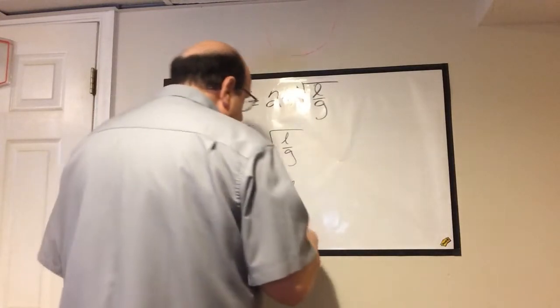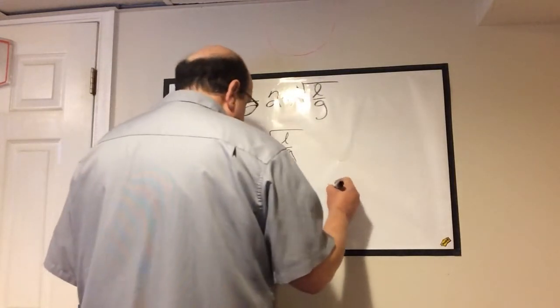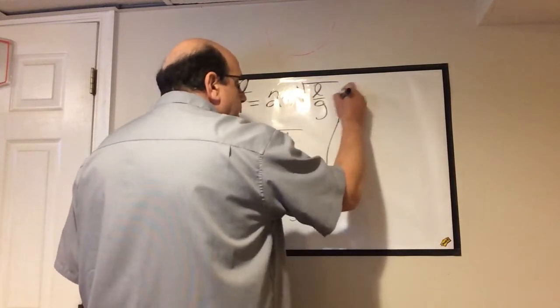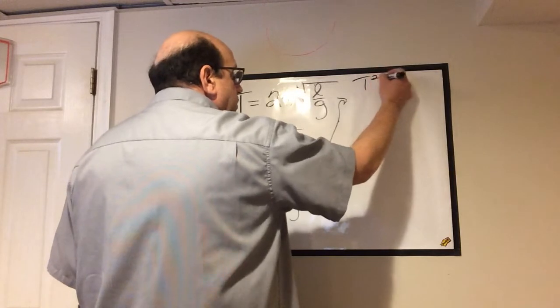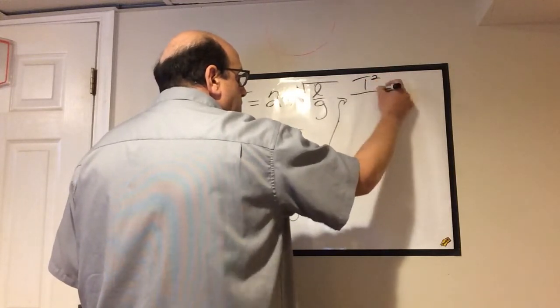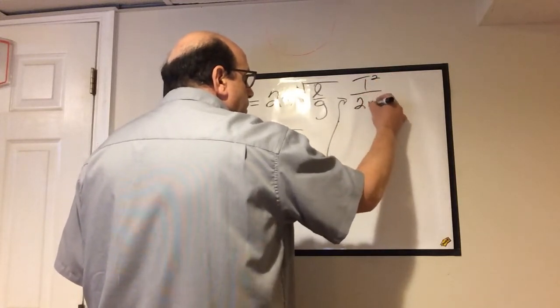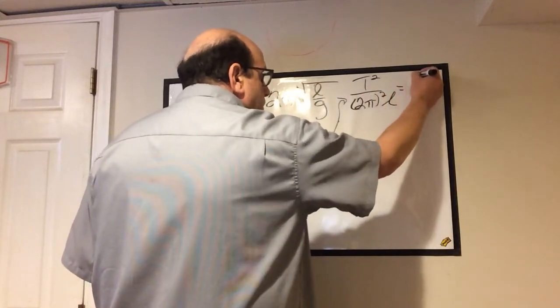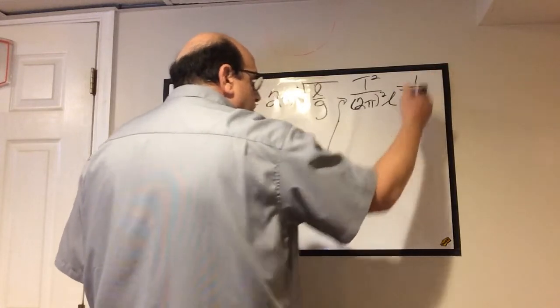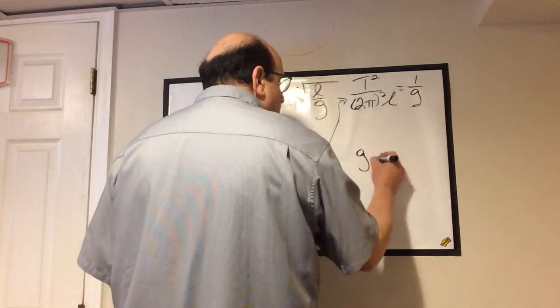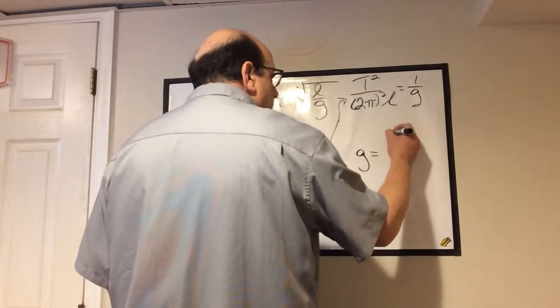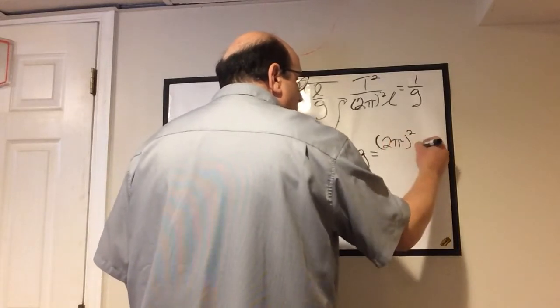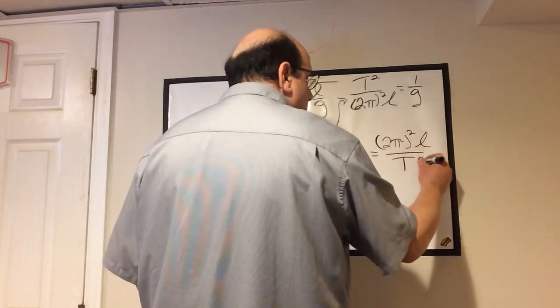Well, then I'm going to divide by L. So I'm going to move it way up here. Time period squared over 2π squared L equals the inverse of G. So if that's the inverse of G, then G is going to be equal to 2π squared times the length divided by the time period squared.